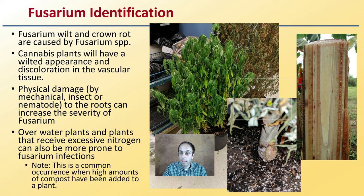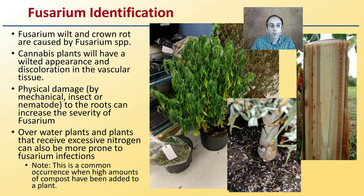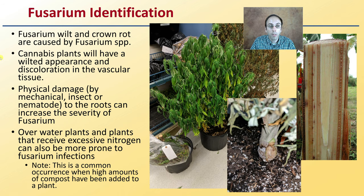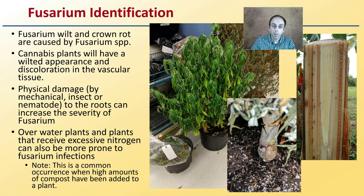The identification of fusarium — fusarium wilt and crown rot, which are caused by the fusarium species, cause cannabis plants to have a wilted appearance and discoloration in the vascular tissue. Here we see the wilted appearance, and right at the soil line, that discoloration. If we cut into the stem, we're going to see a brownish coloration as the disease gets into the internal components of the plant.